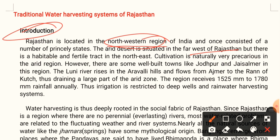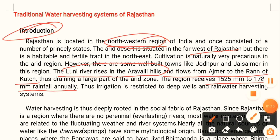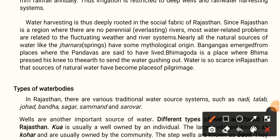The Luni River rises in the Arawali hills and flows from Ajmer to Rann of Kutch, draining a large part of the area. The region receives around 1525 mm to 1780 mm rainfall annually, thus irrigation is restricted to deep wells and rainwater harvesting systems. Cultivation is naturally precarious in the arid region. Water harvesting is deeply rooted in the social fabric of Rajasthan since most rivers are not perennial — they are seasonal and get dried up.